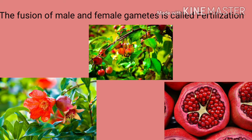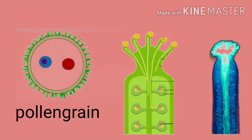The fusion of male and female gametes is called fertilization, by which seeds are produced from the fruits. During pollination, the pollen grain comes to lie on the stigma.